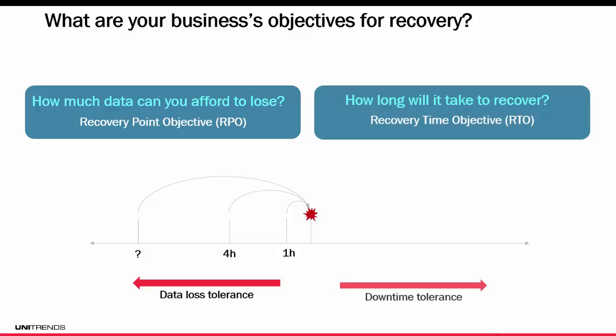The other side to recovery is how long it takes to recover, also known as the recovery time objective, and that really comes down to your downtime tolerance. If your company can't afford to be down for more than an hour, four hours, or your company can be down for 24 hours, that would be set as your RTO. You're going to develop your business continuity strategy based around those two objectives. You're going to accomplish smaller RPOs and RTOs through a more complex and more expensive solution, so bear in mind that everything is a trade-off with a cost-benefit analysis to what's best for your business.